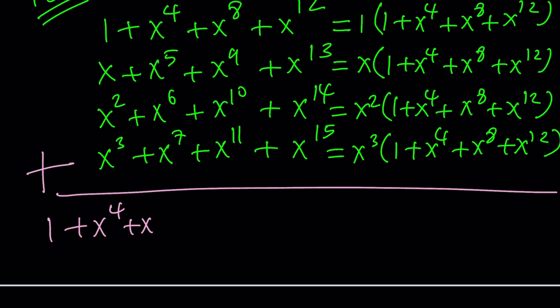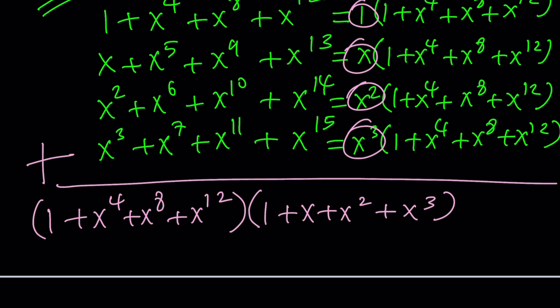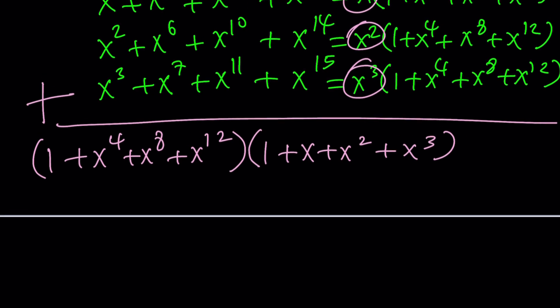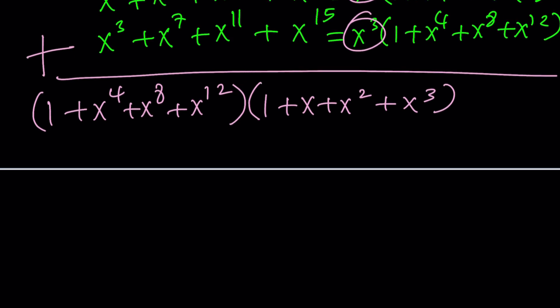By grouping them into four different groups and separating in a smart way, we were able to find a common factor. Now, we're going to add these up, because when we add them all up, it's going to give us our polynomial. But now, we have a common factor: 1 plus x to the 4th plus x to the 8th plus x to the 12th. Once you take that out, these are going to be the terms of the second factor.